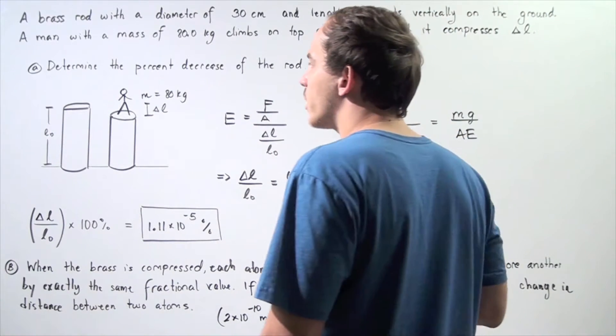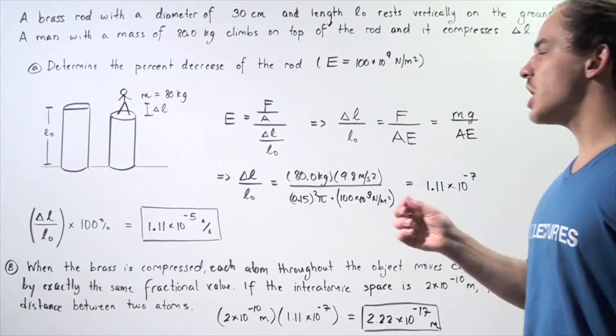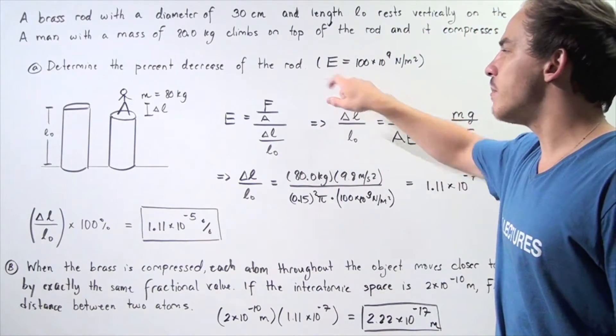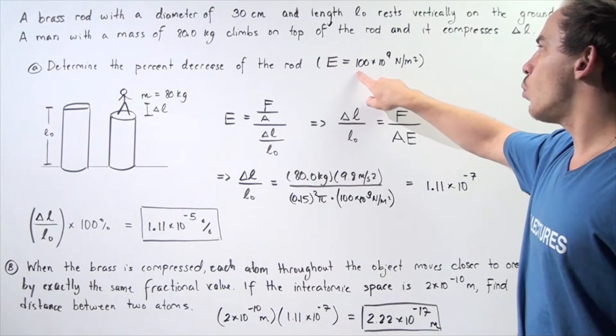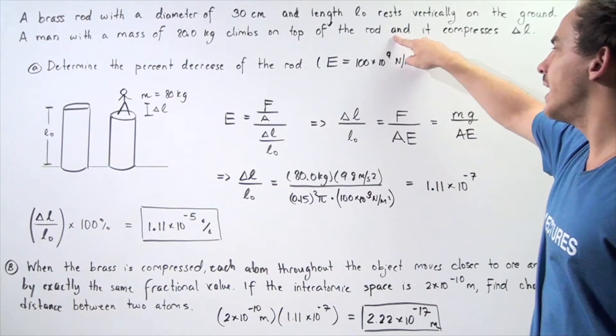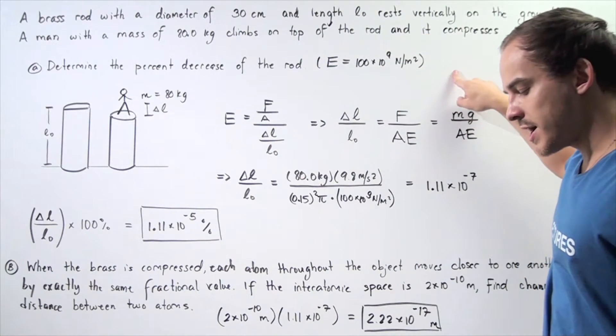Let's begin with part A. Determine the percent decrease of the rod, assuming Young's modulus for brass is 100 times 10 to the 9 newtons per meter squared.